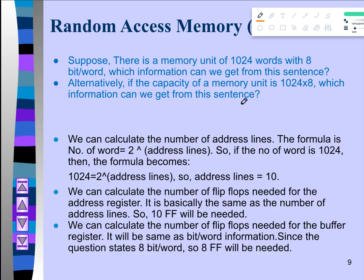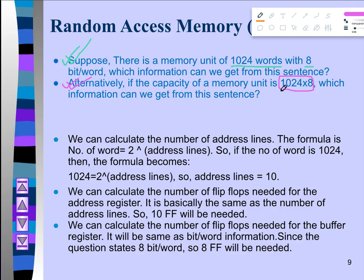The very first information you should get from these sentences is how many words there are and how many bits per word there are. In the first sentence it is explicitly written that there are 1024 words and 8 bits per word. In the second sentence it is not explicitly written — rather it follows a specific convention: 1024 × 8.